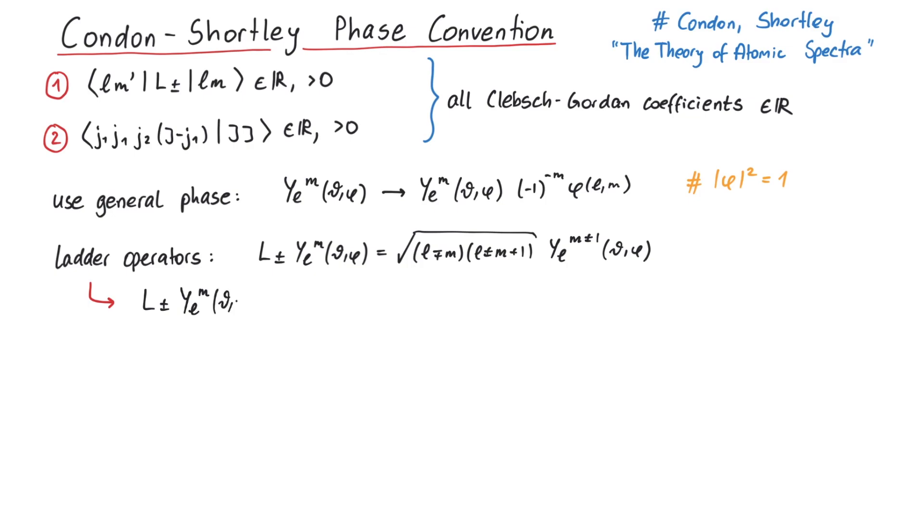On the left, we multiply a minus one to the power of minus m, and a phi of l and m. And on the right, we have to multiply a minus one to the power of minus m plus minus one, and a phi of l and m plus minus one, since the quantum number m has changed on the right.